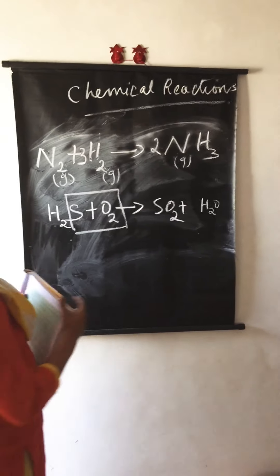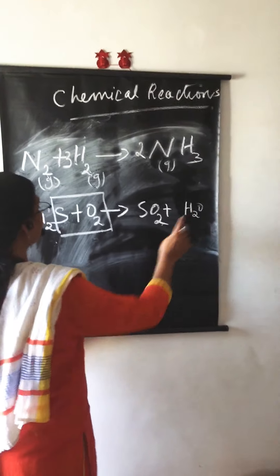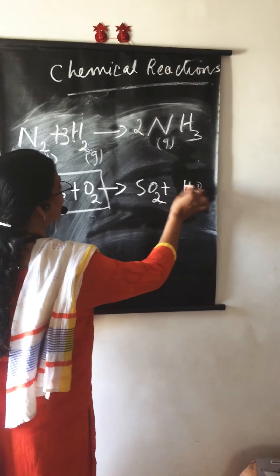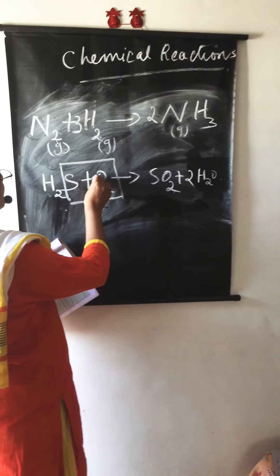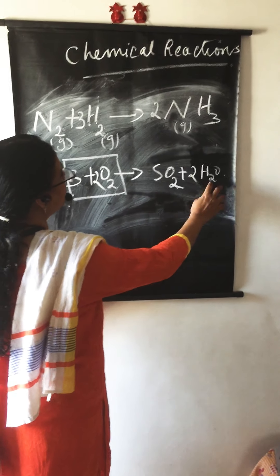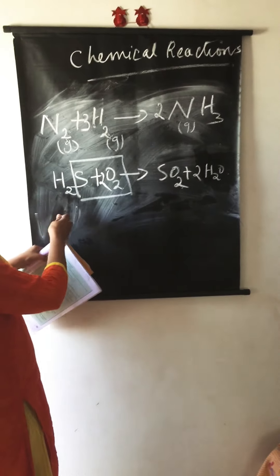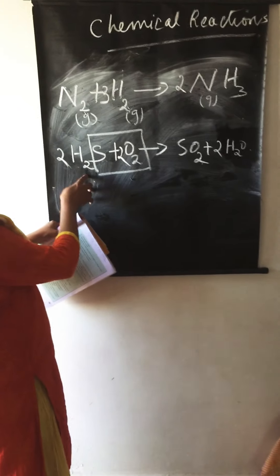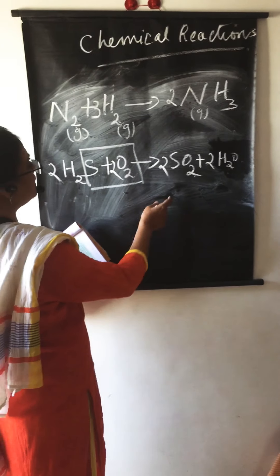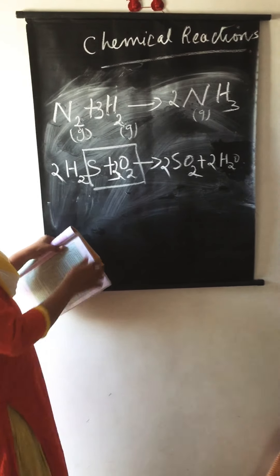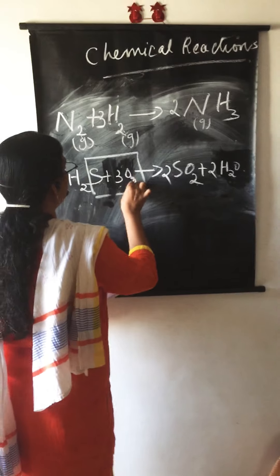Let's balance H2S + O2 → H2O + SO2. On the left: 2 hydrogen, 2 oxygen; on the right: 2 hydrogen, 2+1 = 3 oxygen. Not balanced. Try putting 2 in front of O2 — that gives 4 oxygen on the left. On the right, put 2 in front of H2O — that gives 2+2 = 4 oxygen, but now hydrogen is 4 on the right. Put 2 in front of H2S — that gives 4 hydrogen on the left. But then sulfur becomes 2 on the left. Put 2 in front of SO2. Now oxygen: 4 on the left; 2+4 = 6 on the right. So make it 3 in front of O2 — 3×2 = 6. Now the equation is balanced: 2H2S + 3O2 → 2H2O + 2SO2.